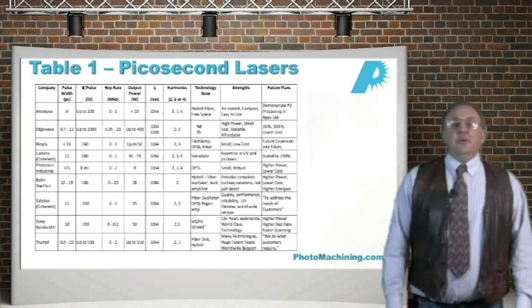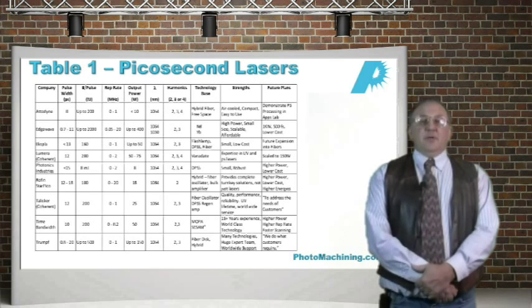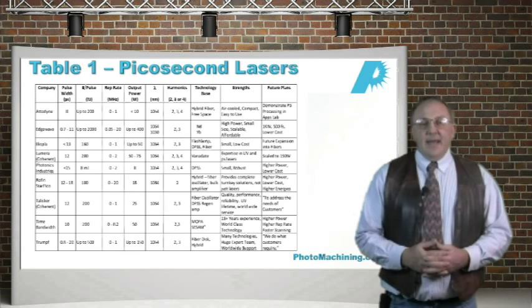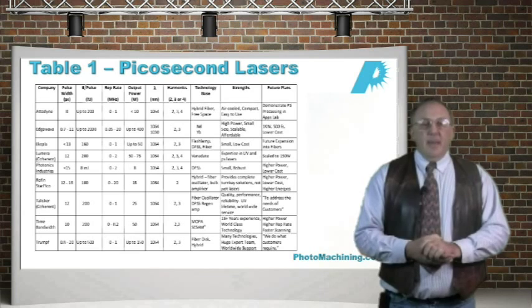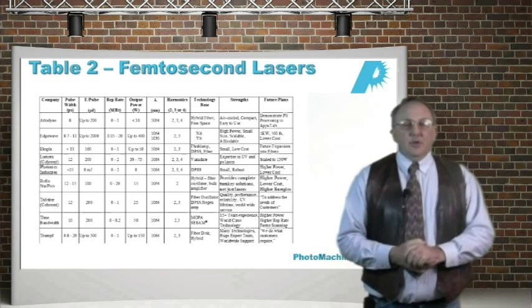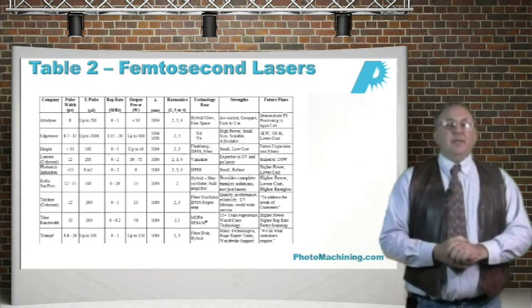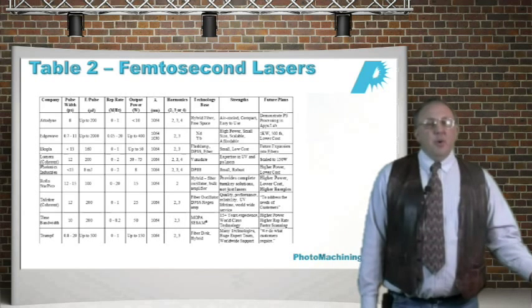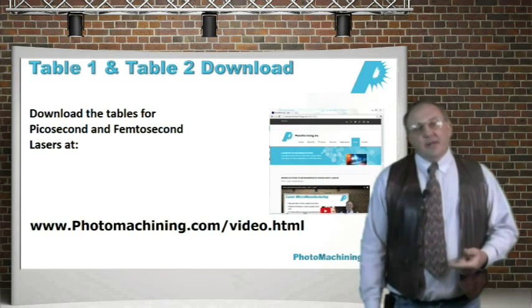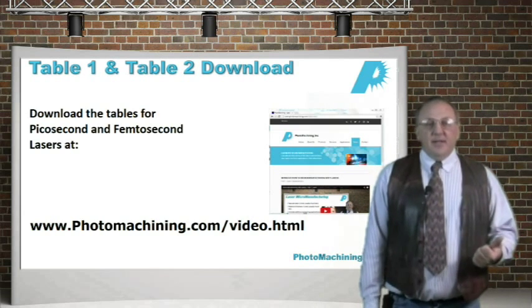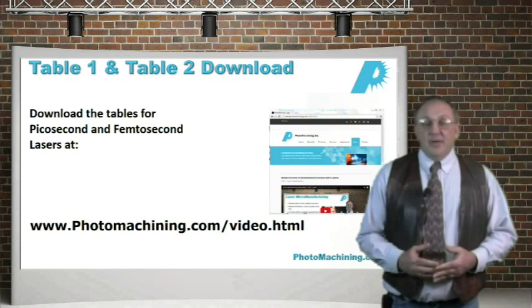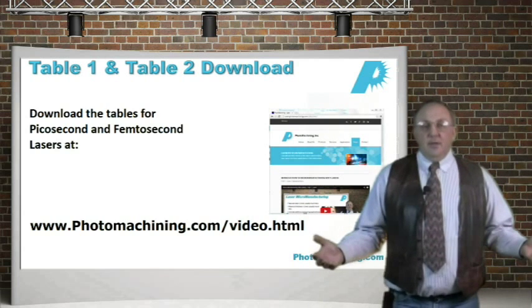Last May I went to the Laser Munich show — the biggest laser show in the world — and asked a number of vendors of short pulse lasers to give me their specifications so I could tabulate them. Table one shows the tabulation of picosecond laser manufacturers as of May 2013. This table is already superseded because many of these companies are moving to higher and higher power, and of course lower cost. Five years ago you probably only had half a dozen companies in the world making these devices for commercial applications; now you've probably got a couple dozen. Everybody is jumping into the short pulse world because there are a lot of applications here.